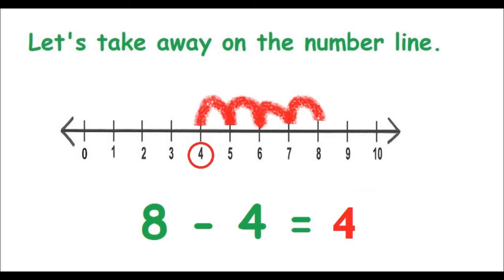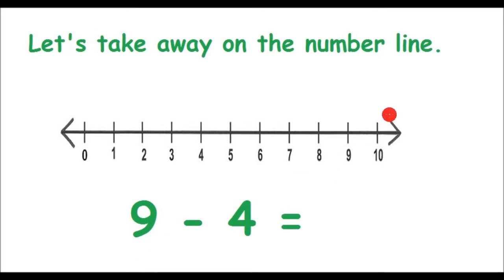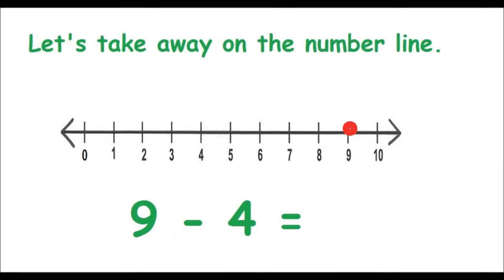Let's look at another example. Boys and girls, let us look at this example: 9 take away 4 is equal to something. Again, we look at our first number — 9. Because we are taking away, we will go backwards on the number line. So let us find number 9 on our number line. Here is 9. Because we are asked to take away 4, we will jump backwards 4 times.